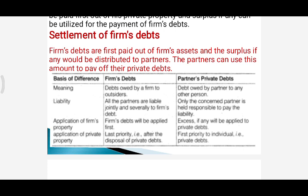Next is application of firm's property: the firm's property is sold off and first of all firm's debts will be paid off. Whatever the excess is, it will be distributed amongst the partners in their profit-sharing ratio, and whatever share a particular partner receives can be applied to pay off that partner's private debts.